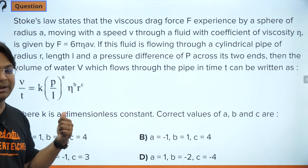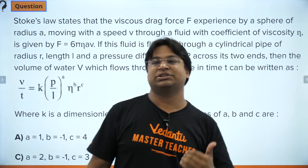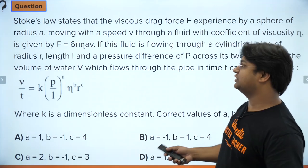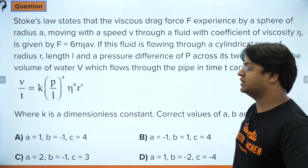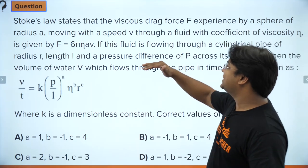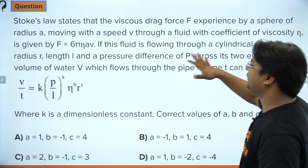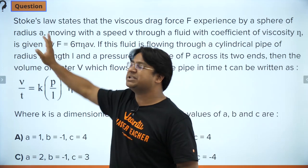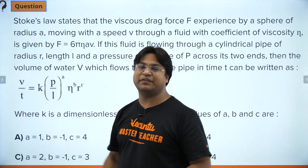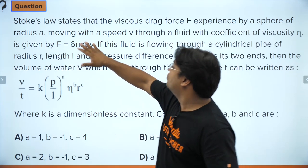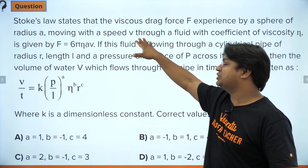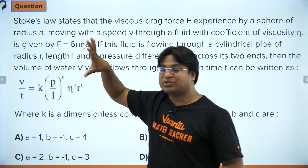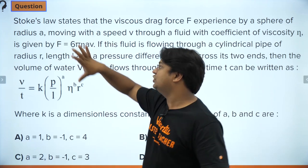Now let's look at the questions on units and dimensions on screen. Students of 12th standard should be good at dimensions, so I'll take two questions. The first one is on Stokes' law, which states that the viscous drag force F experienced by a sphere of radius a moving with uniform speed v through a fluid with coefficient of viscosity eta is given by F = 6π eta r v. Here, a represents radius, so its dimension is that of length.